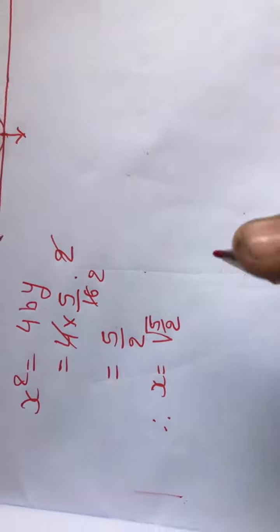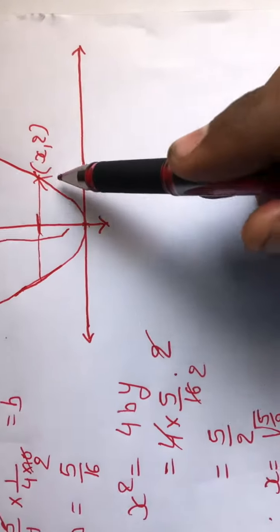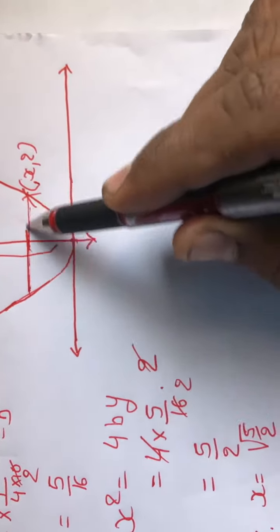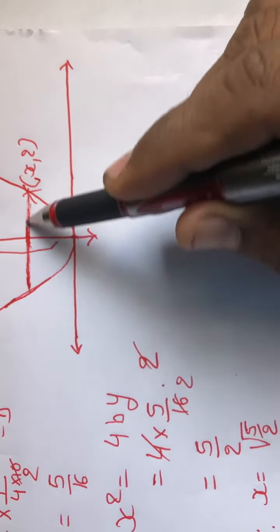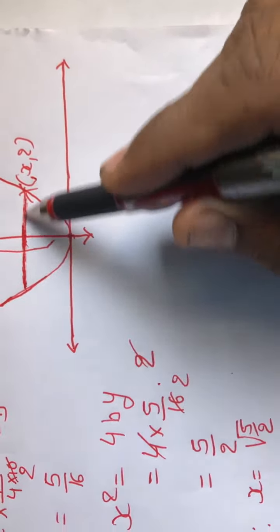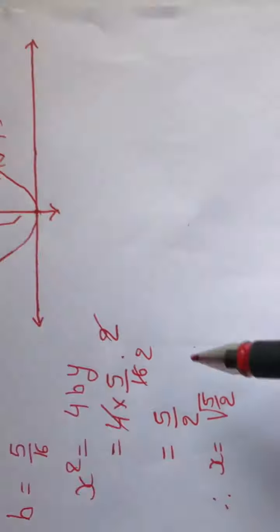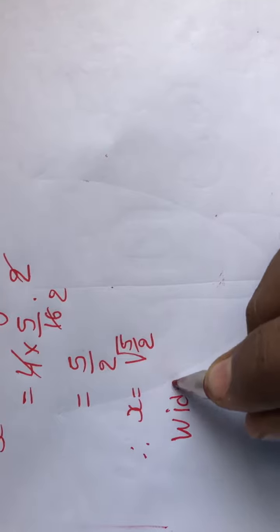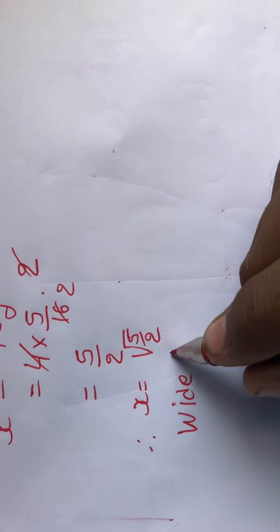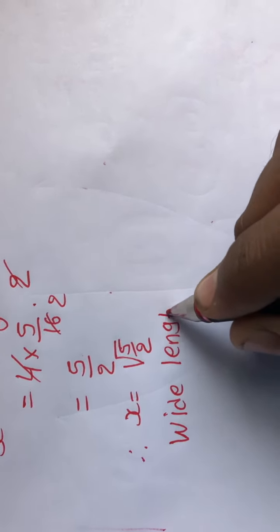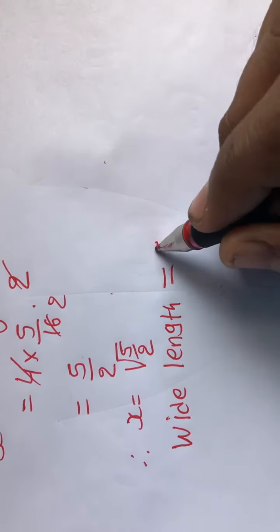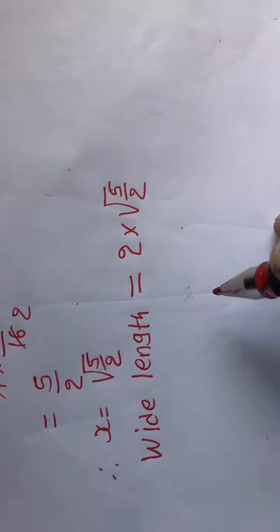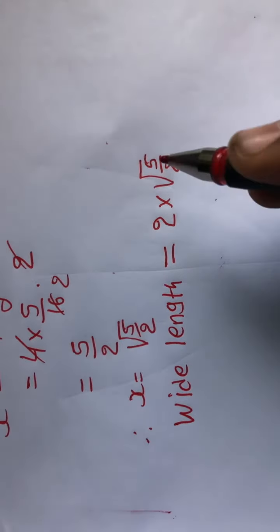Now how wide? This is my x, but how broad? If we need to count this length, this length will be double of x. So how wide? The wide length will be 2 into root 5 by 2. That will be my answer. Thank you.